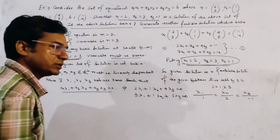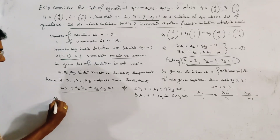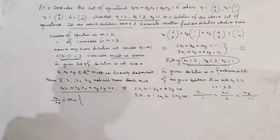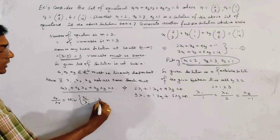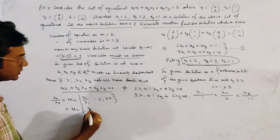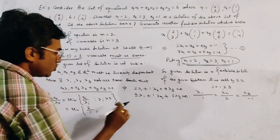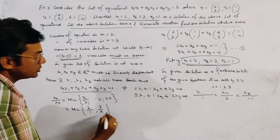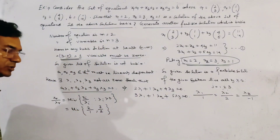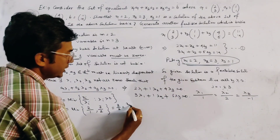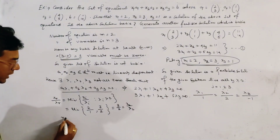We have lambda1=1, lambda2=2, lambda3=-1. We choose xR/lambdaR = minimum of xi/lambda_i where lambda_i > 0. So we compute min{x1/lambda1, x2/lambda2} = min{2/1, 3/2} = min{2, 1.5} = 3/2. Since 3/2 = x2/lambda2, we get R=2.